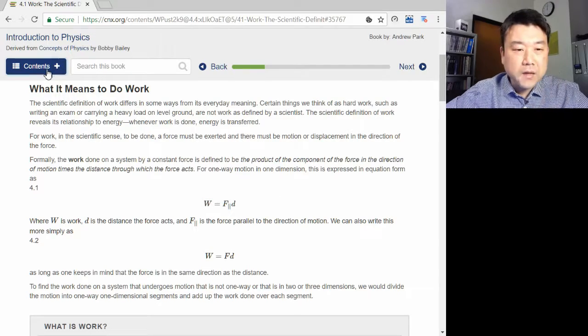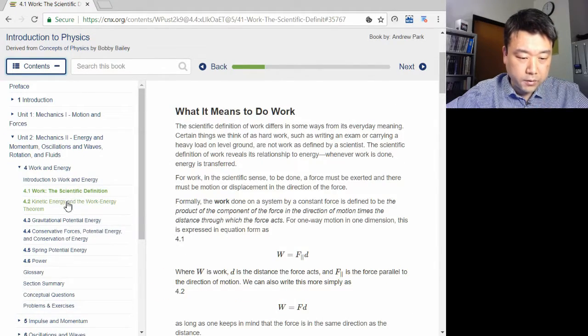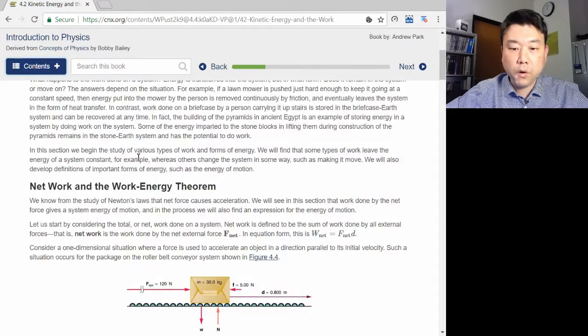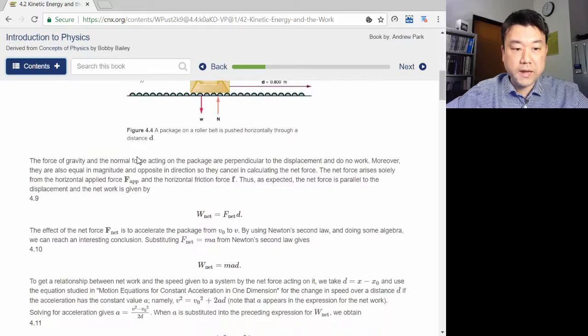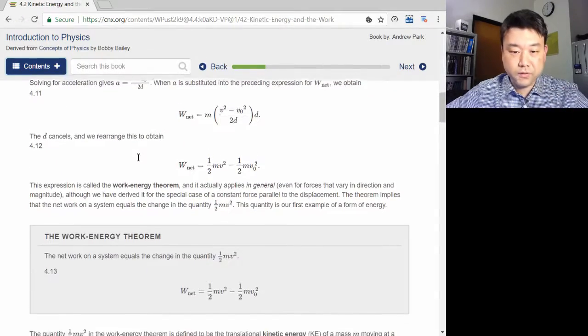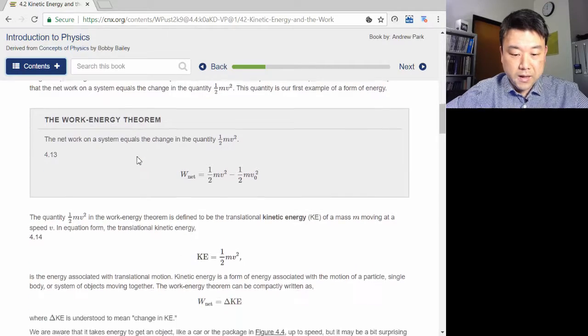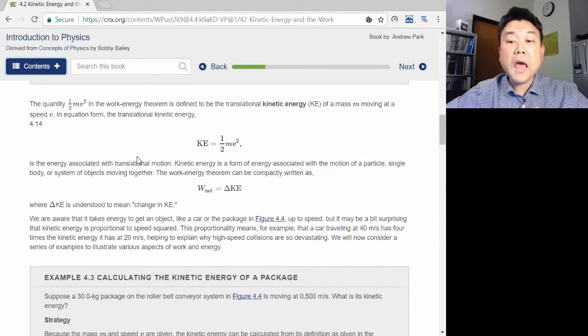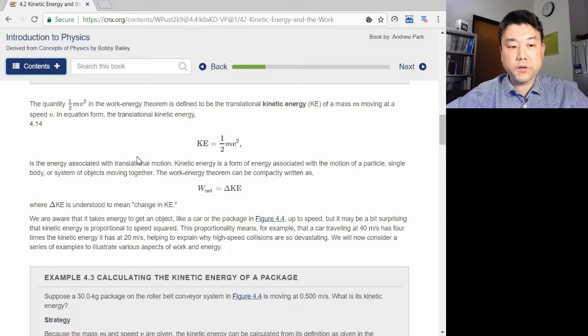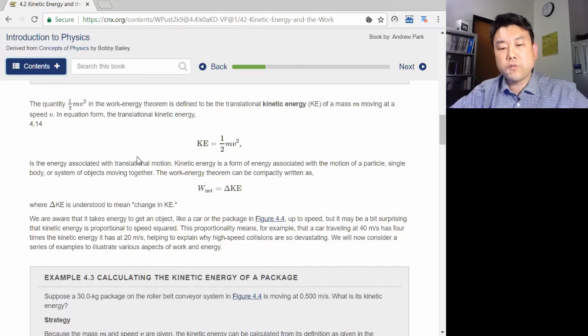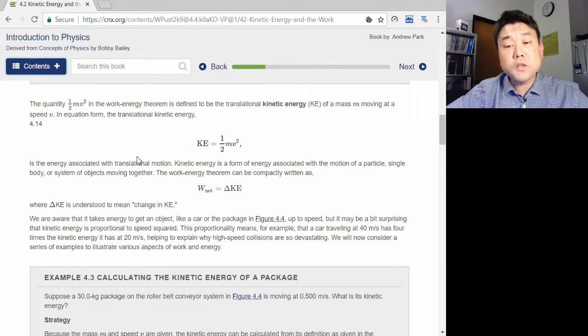Anyways, the relationship of work to the reservoir is best expressed in the work energy theorem, which is the next section. It basically says, you can read through the derivations on your own, that the network done gives the change of kinetic energy. This is the most basic way we can start to relate to energy, the first conserved quantity we introduce.